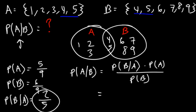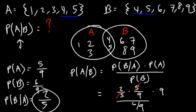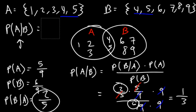So P(B|A) is 2/5, times P(A) which is 5/9, divided by P(B) which is 6/9. We can cancel the 5s, and if we multiply the top and bottom by 9 we can cancel the 9s as well. So we're left with 2 over 6, which reduces to 1 over 3. The probability that A will occur given that B has already occurred is 1 out of 3.